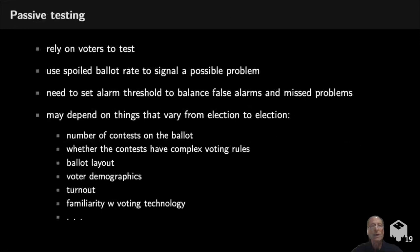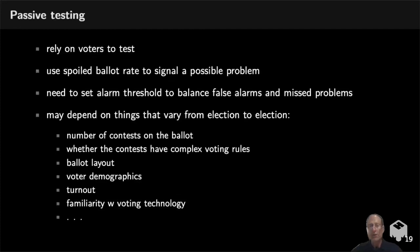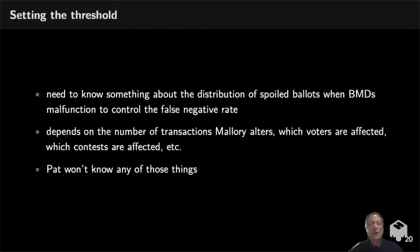Passive testing relies on voters noticing errors and spoiling their ballots. To know how large a spoilage rate should sound an alarm, we need to know how often voters spoil ballots when machines function correctly, and how often they will notice and report errors if errors occur. The problem is that this training data is unlikely to be available - you can't step on the same election twice. There are all kinds of differences from election to election that change the spoiled ballot rate, including ballot complexity, layout, and complexity of the social choice functions.